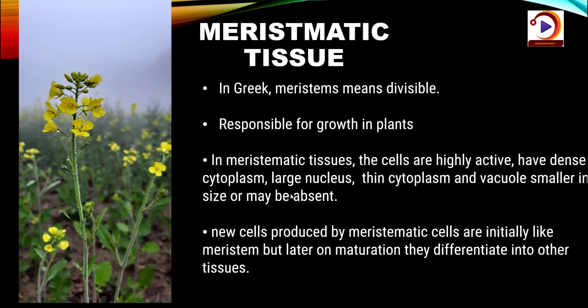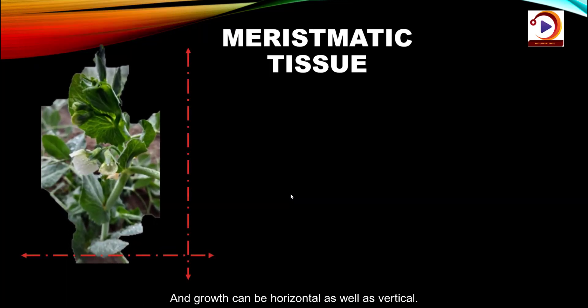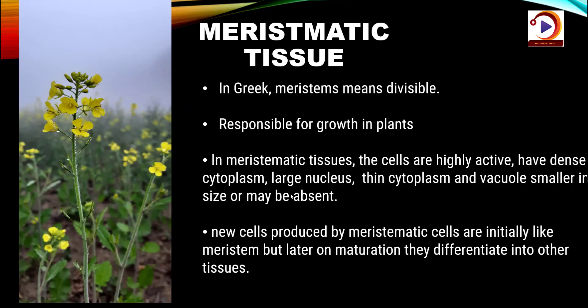This is why vacuoles are very small or altogether absent. In Greek, meristem means 'divisible,' so the name suggests this tissue is responsible for growth through division of cells. The growth can be horizontal as well as vertical. Meristematic tissue is present in roots and shoots and is responsible for unilateral growth — growth in one direction. The cells of this tissue are very active and have dense cytoplasm and thin cellulose walls.